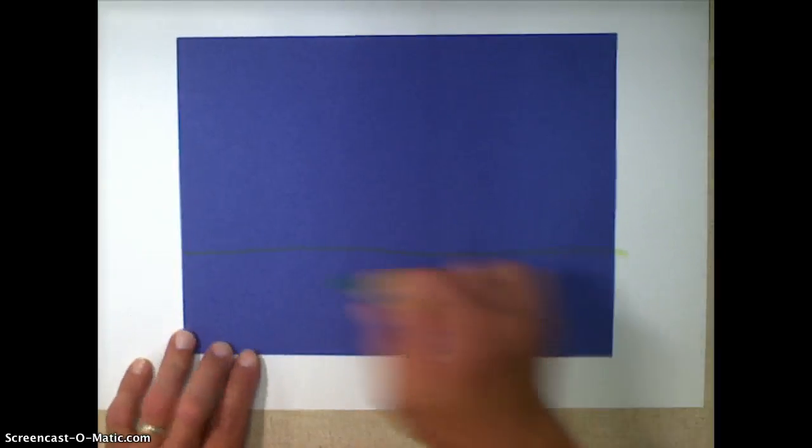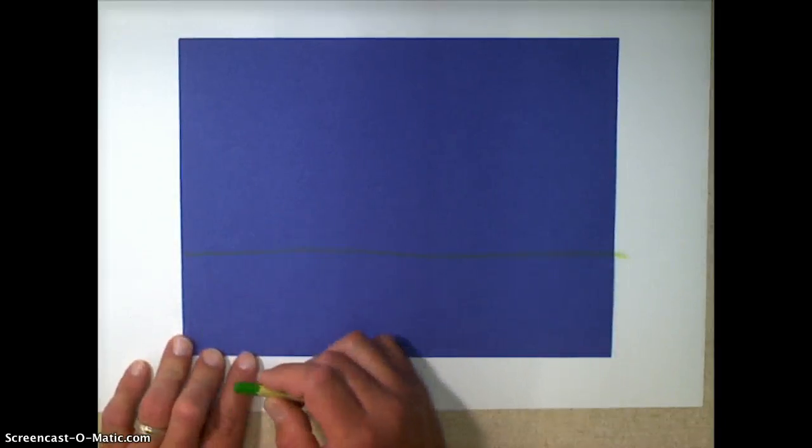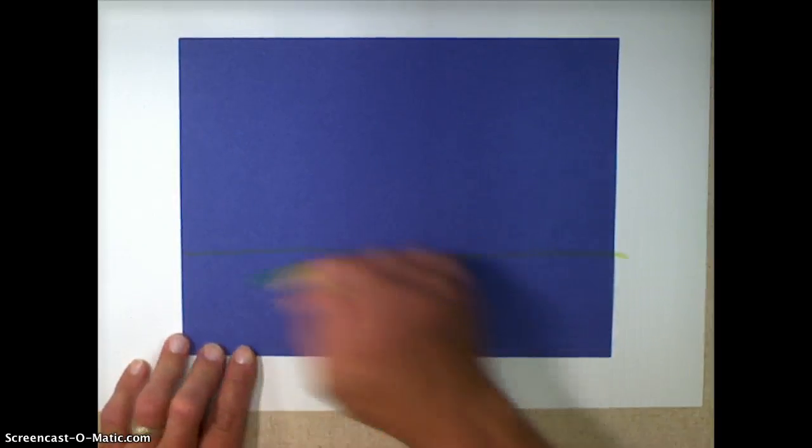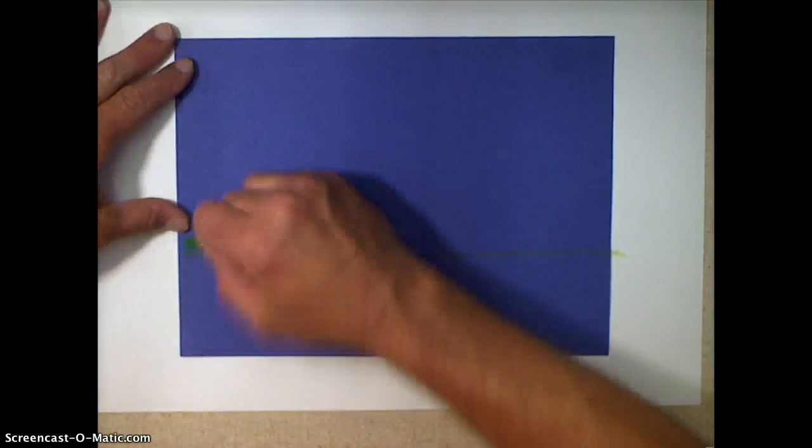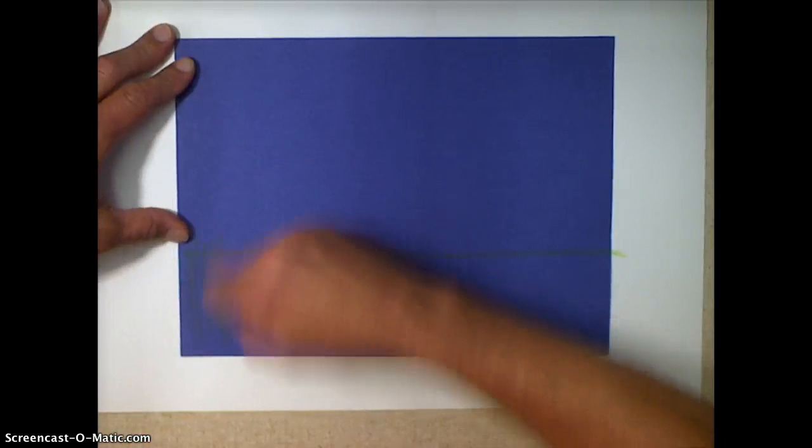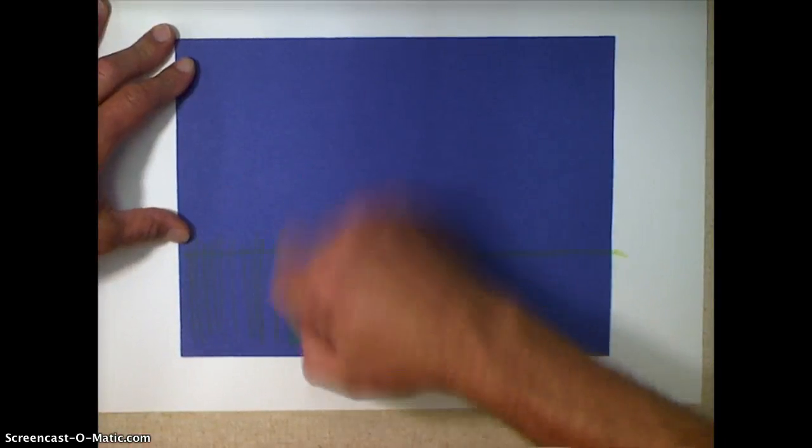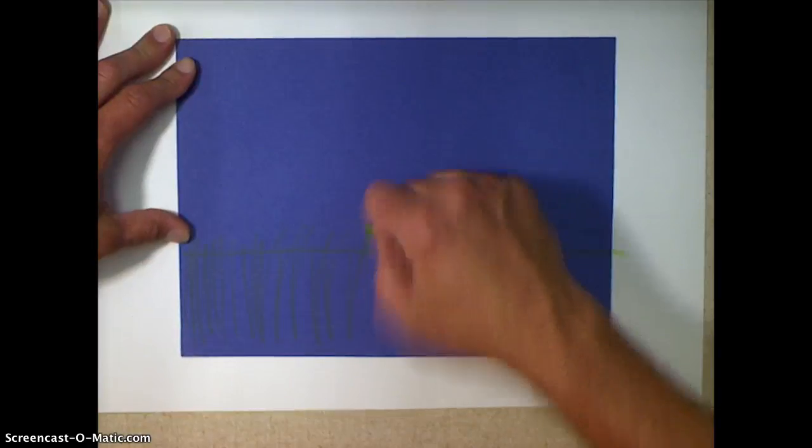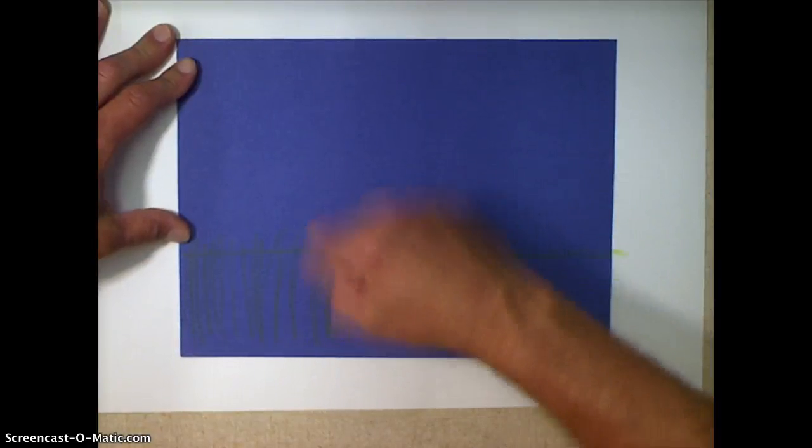So I'm going to make my grass and we're going to pretend like we're laying down on the ground, looking at it from an ant's eye view. I'm going to make my grass by just taking my crayon and going up and down. Or you can make like tall triangles too if you want, but we're going to color this whole thing in.